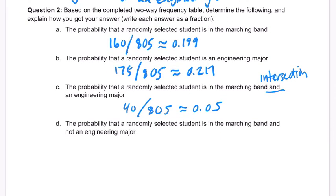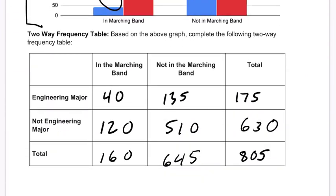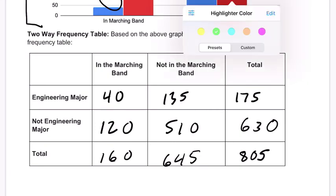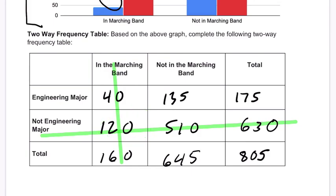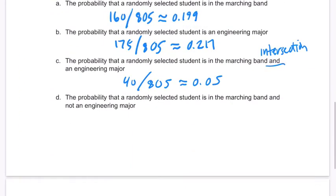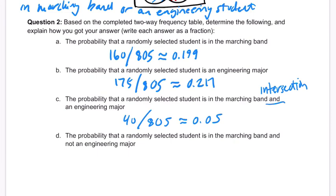Finally, the probability that a randomly selected student is in the marching band and not an engineering major. They're in marching band but not an engineering major, so that intersection gives us 120 out of 805, which is about 0.149. I hope this helped. Thank you.